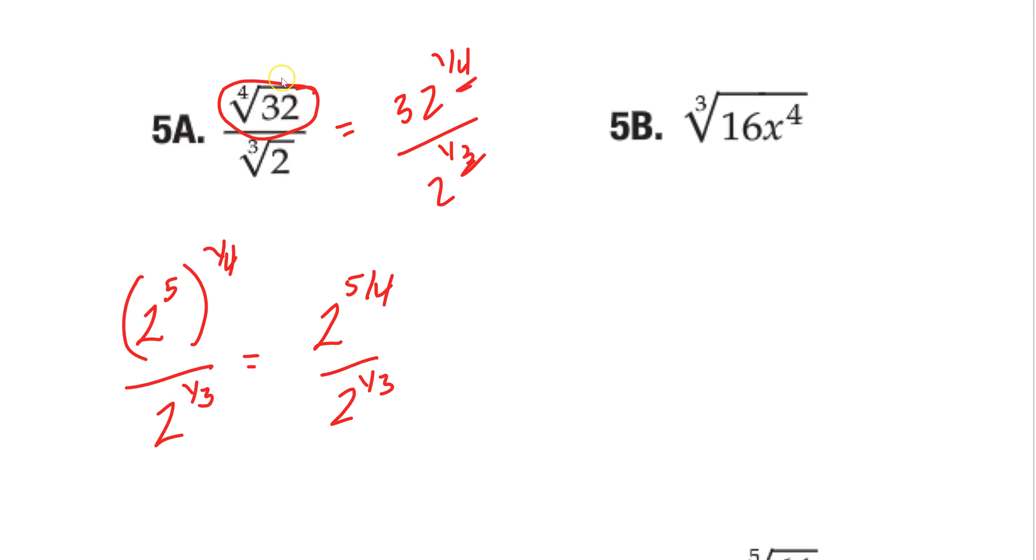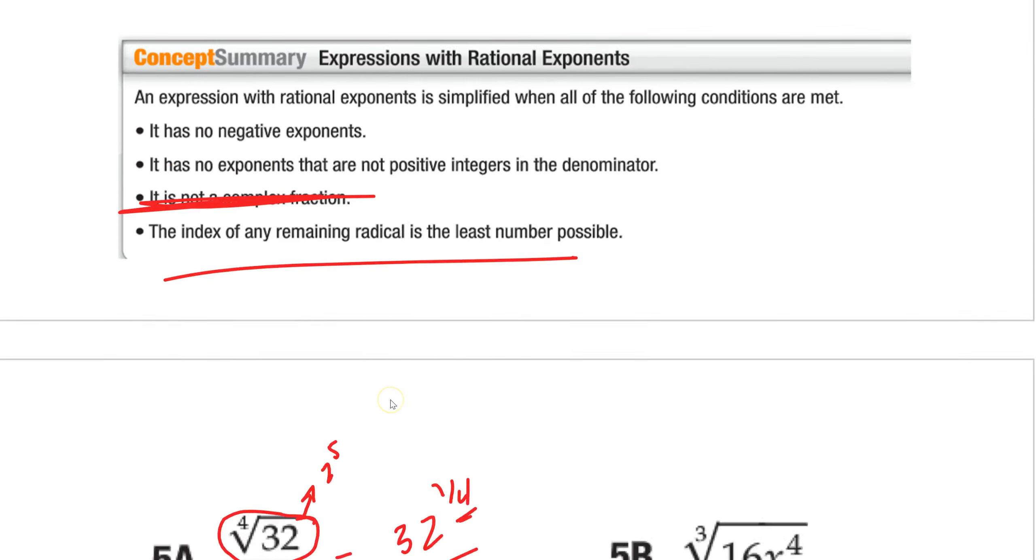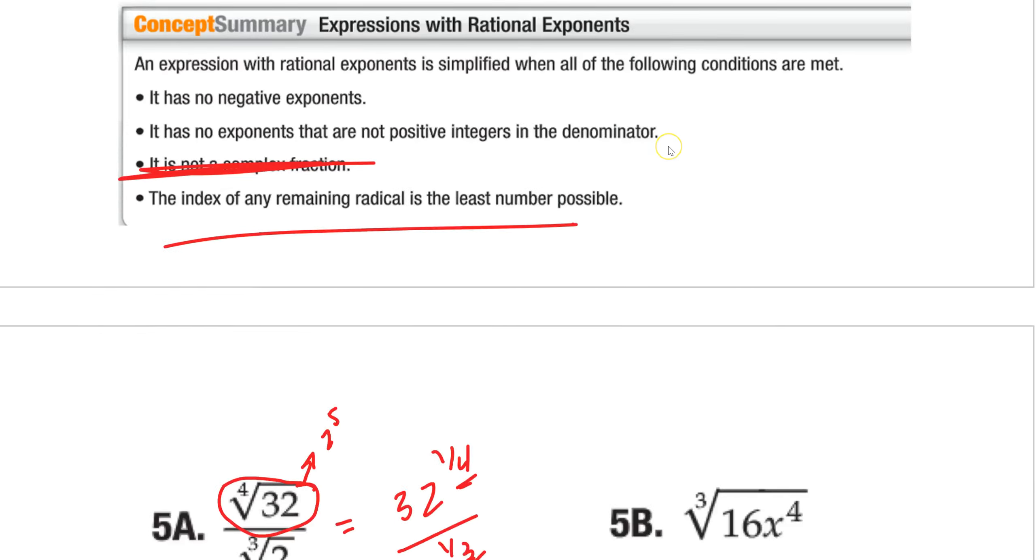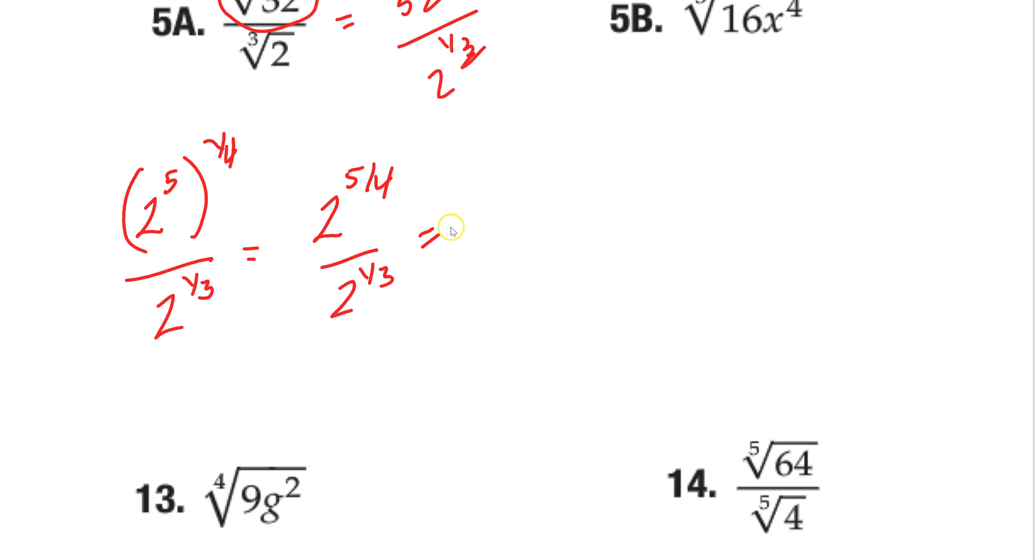So you have 2 to the 5th to the 1 fourth over 2 to the 1 third. And if we have that, that's the same thing as saying 2 to the 5 fourths over 2 to the 1 third. So again, what I looked at it to do is like wait, I can't do anything here. They're the same, they're different powers, they're not the same base, I can't do anything. But what I did is we wrote 32. I was like wait, I can rewrite that. 32 is the same thing as saying 2 to the 5th power. So I switched 32 with 2 to the 5th, and I simplified it a bit.